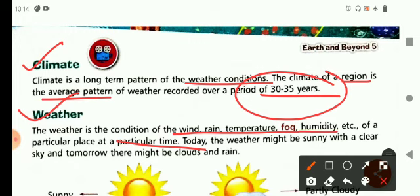Today the weather might be sunny with a clear sky, and tomorrow there might be clouds and rain. So weather can be changed from day to day, hour to hour, or minute to minute.